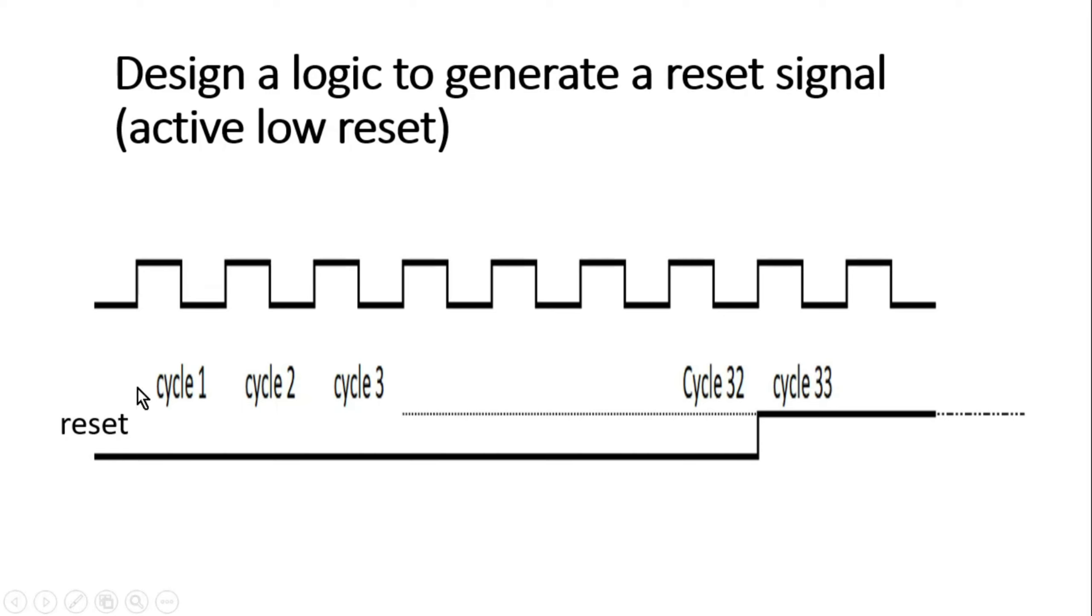As soon as this clock is supplied, for the first 32 clock cycles, this reset signal should remain zero. And from the 33rd clock cycle onwards, this reset signal should remain high.